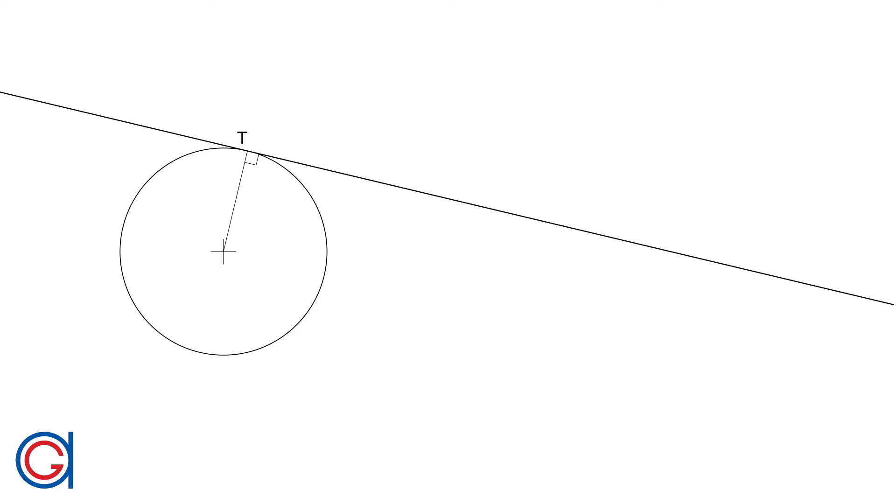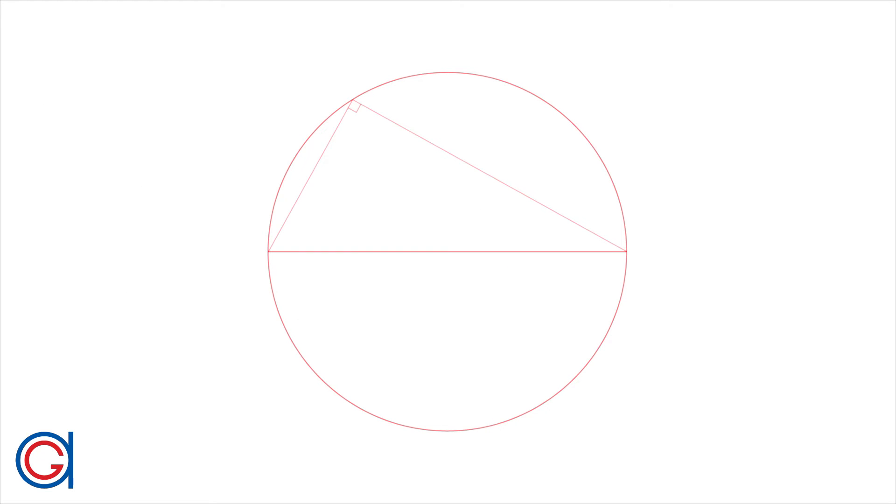We will continue with Thales theorem which states that if you pick any random point on the circumference of a circle and join it with the ends of a diameter, you will always form a right angle at this point as you can see here from the example on the screen.